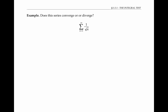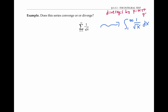Let's look at another example: the sum from n equals one to infinity of one over the square root of n. Please pause the video for a moment and think about how you might use an integral to decide if this series converges or diverges. A natural integral to consider is the integral from one to infinity of one over the square root of x dx. This integral diverges by the p-test, where p is equal to one half, which is less than one.